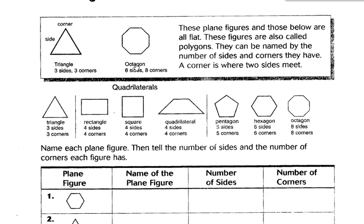These figures are also called polygons. Polygons are basically shapes and depending on the number of sides they have, each polygon has a specific name. If it has three sides and three corners, what's it called? If it has four sides and four corners, it's a square, rectangle, or quadrilateral. Five sides is a pentagon, six is hexagon, eight is octagon, and if it has ten, it's a decagon. They can be named by the number of sides and corners they have. A corner is where two sides meet.